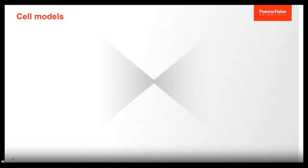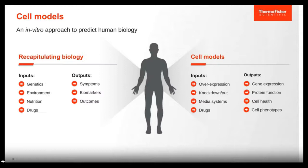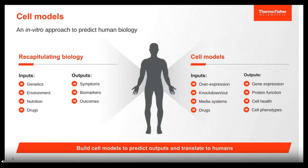Why do we create 3D models? We want to create an in vitro approach to predict human biology. To capture human biology, we want to mimic the inputs that impact the body and create a representative cell system that can capture these phenomena. As with human biology, we aim to measure changes to these inputs in our cellular system to give us a glimpse of what we would expect to see in an in vivo or human setting. We want to build these cell models to predict outputs that best translate to humans.